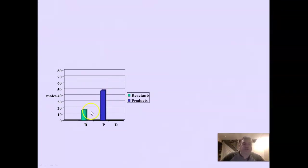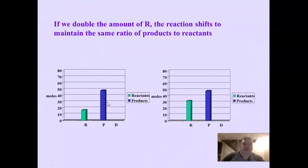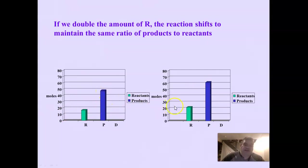One more time in graph form. See the ratio of reactants to products? If we double the amount of reactants, the equilibrium is going to shift to make more products to get back to the same ratio. Those go down, those go back up, and it maintains relatively the same ratio of reactants to products — different amounts, but the same ratio.